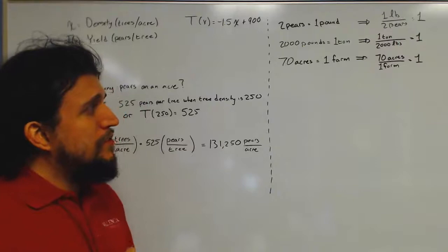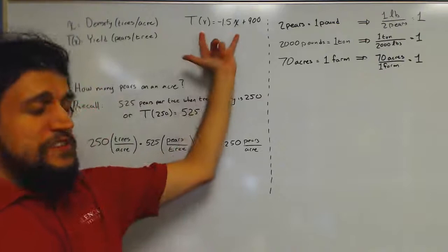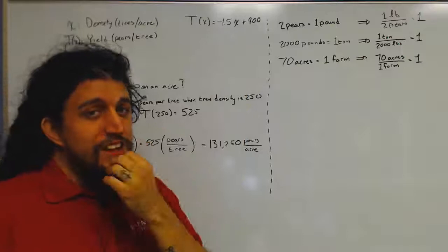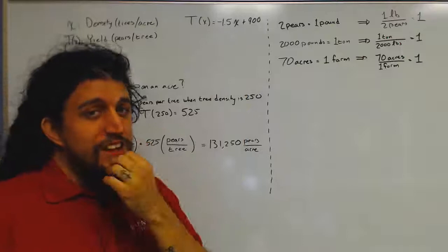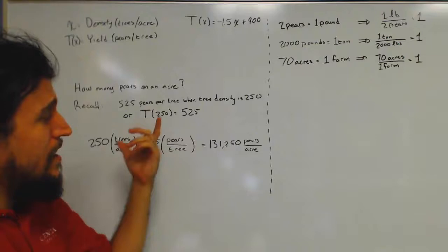So in the first part of the exercise we came up with a linear equation, T of x, that gives us the yield per tree as a function of the tree density x. And so the next part of the problem is we've got to come up with an equation, or a function rather, that gives us the total number of pairs on a single acre given the tree density.